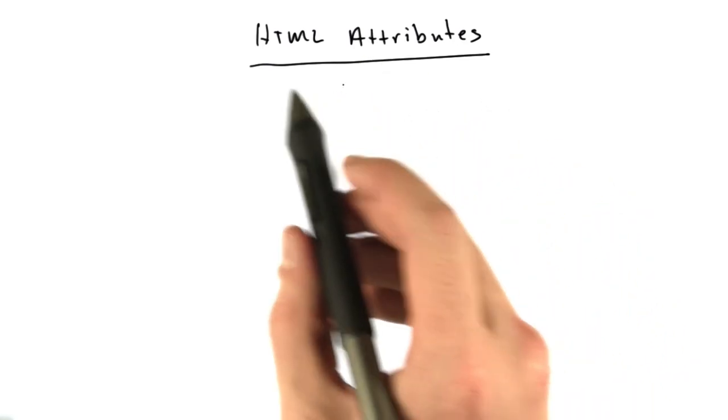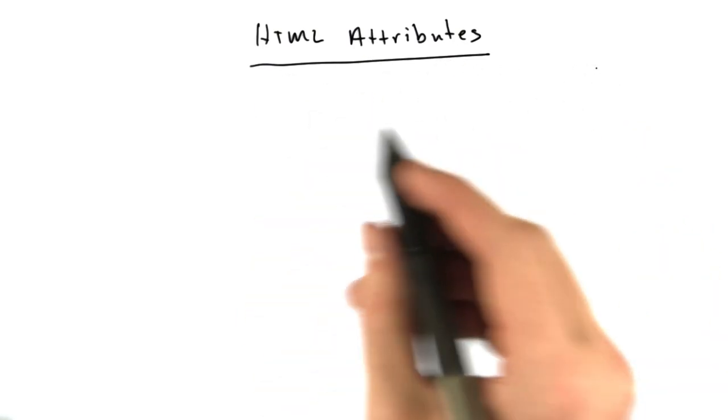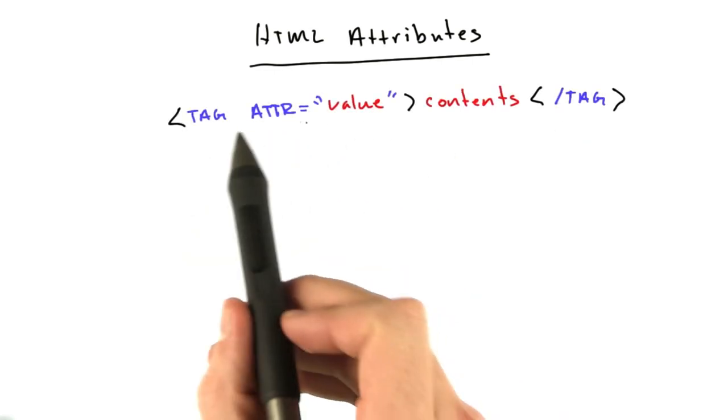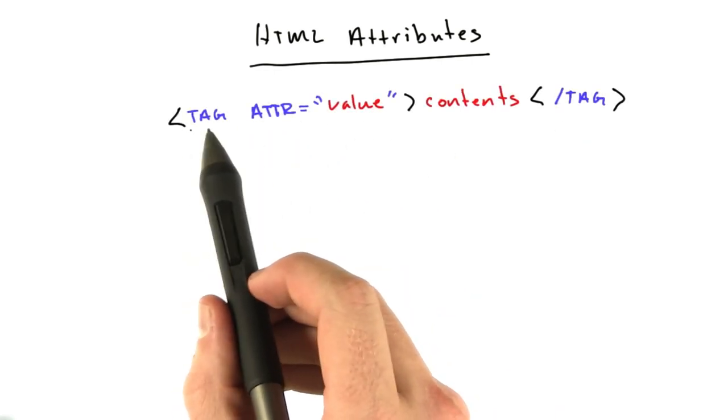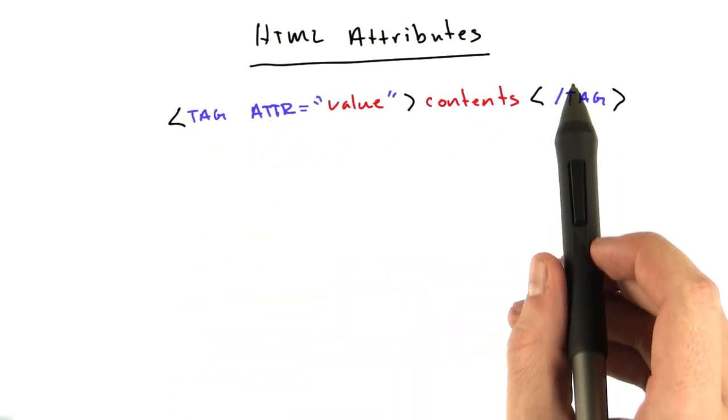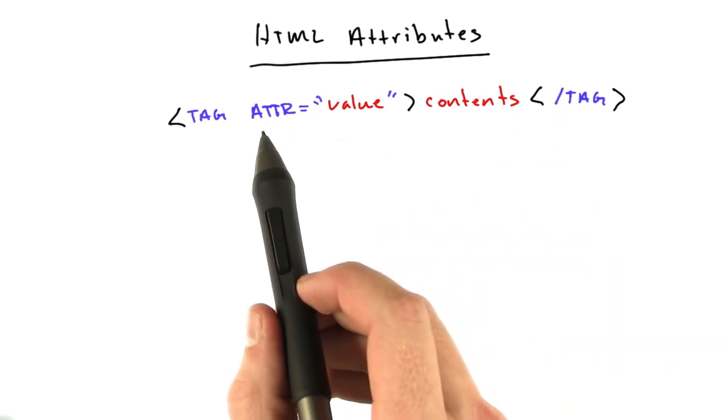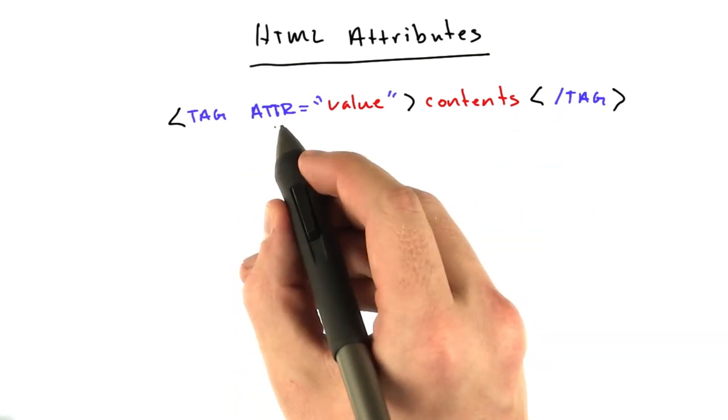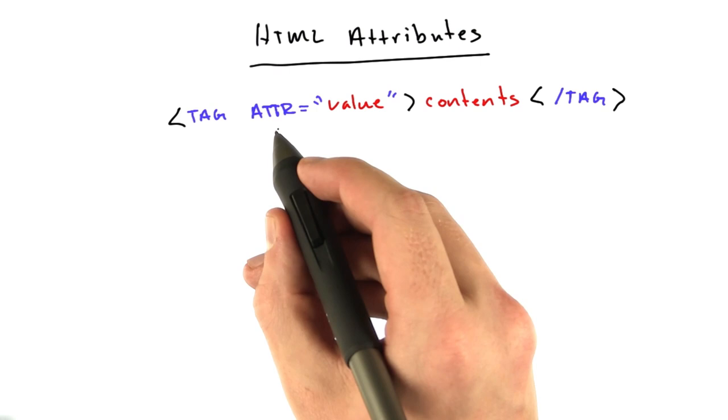Okay, I'd like to teach you about a new concept. These are called HTML attributes. They look something like this. We still have our opening tag name and the closing tag as before with the slash, but we have a new thing called an attribute. Attributes have a name. In this case, I just called it adder.